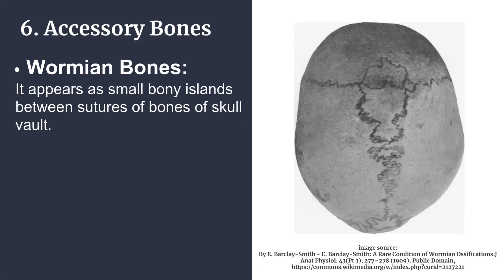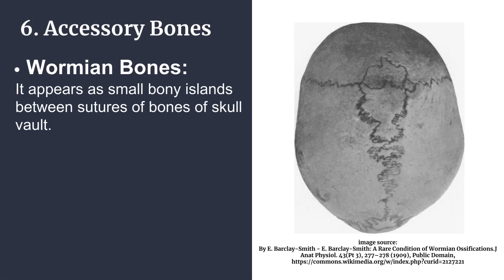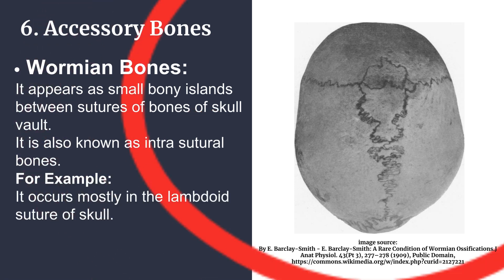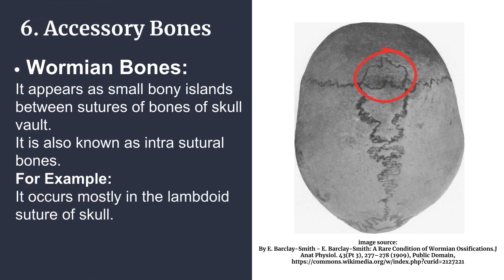Wormian bones appear as small bony islands between sutures of bones of the skull vault. They are also known as intrasutural bones. For example, they occur mostly in the lambdoid suture of the skull.